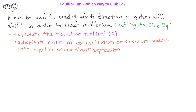Once we've done this, the reaction quotient can be compared to the equilibrium constant to determine which direction the reaction will proceed to reach equilibrium. When we make this comparison, we should use the equilibrium constant on the left and the reaction quotient on the right — this is also alphabetical order.